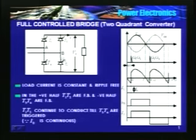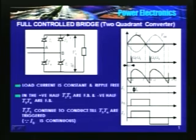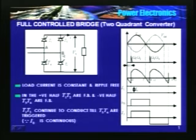Since T3 and T4 are conducting, potential of B is the same as the positive DC bus and potential of A is the same as the negative DC bus. In the positive half, potential of B is less than potential of A. So we get the negative of the input voltage — the output voltage is VBA. This continues till you trigger the incoming T1 and T2 thyristors.